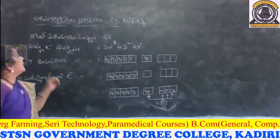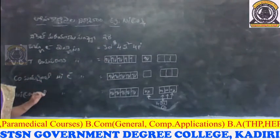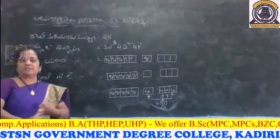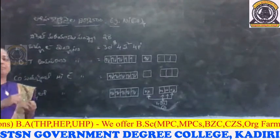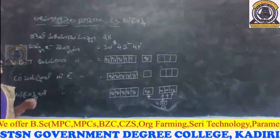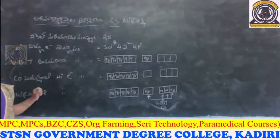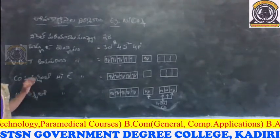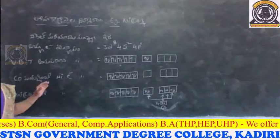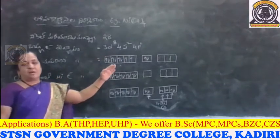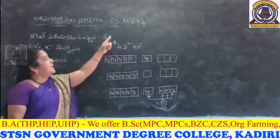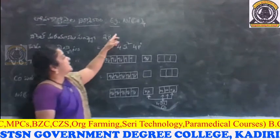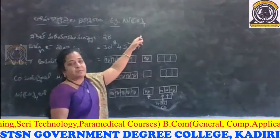So the nickel tetracarbonyl will be the first example. This is a very important topic of carbonyls. So the best example of nickel tetracarbonyl is: CO taken 4 times — Ni(CO)₄.